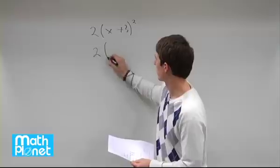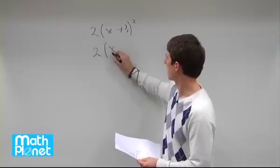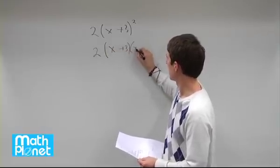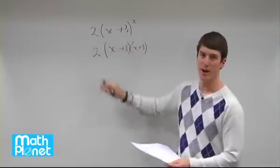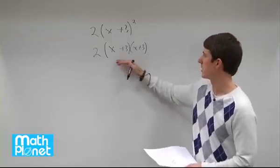So we'll still have 2, and then we need to square this. That can be written as x plus 3 times x plus 3, and then we have to use the rules of expansion here to get this all out.